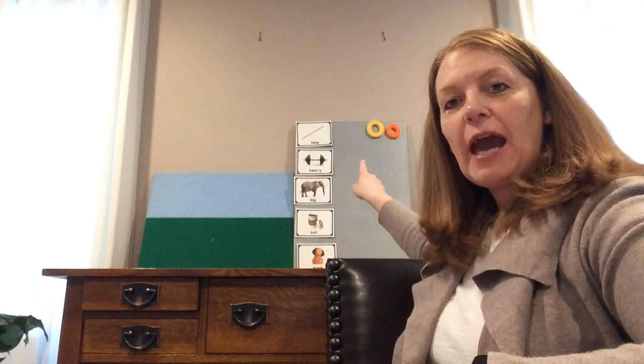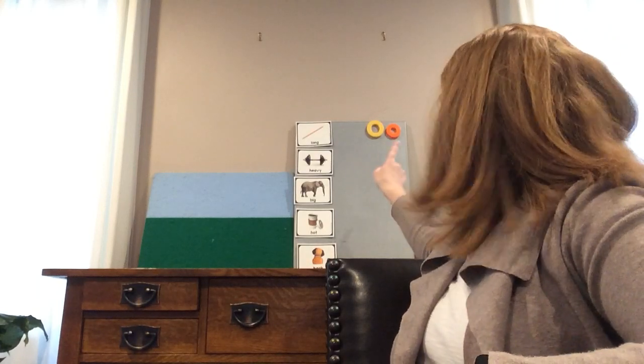Look behind me. The capital O is the one that's yellow, and the lowercase o is the one that's orange. I like the O's because the big capital letter looks the same as the little letter. So O can make this sound — O, like Olivia — or it can make an 'ah' sound, like opposite.